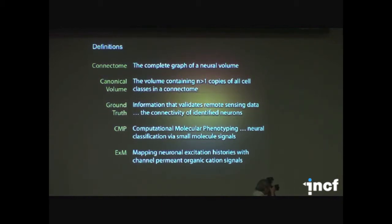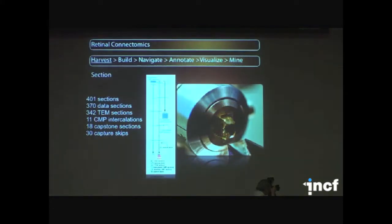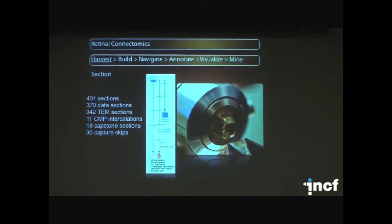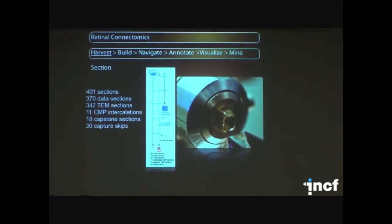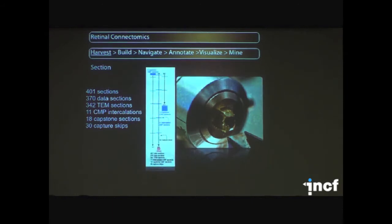And then I will skip over excitation mapping. What we've done is take one of many possible solutions to building a connectome. We've built one retinal connectome, and the first step is to harvest. We're old-fashioned. We do manual sectioning. It shouldn't be a barrier to generating any connectome. It's relatively small in terms of the number of sections, 400 sections. But the key thing is that we have embedded molecular information that's important to us in understanding retinal circuitry.